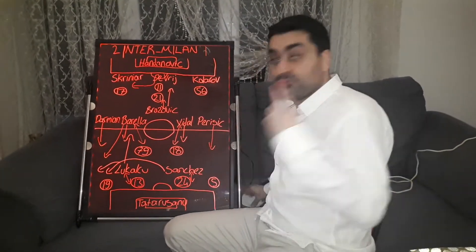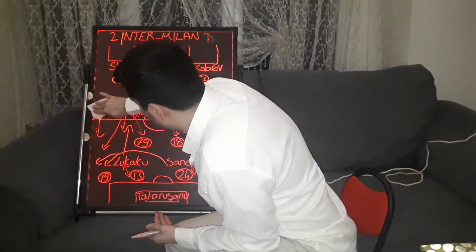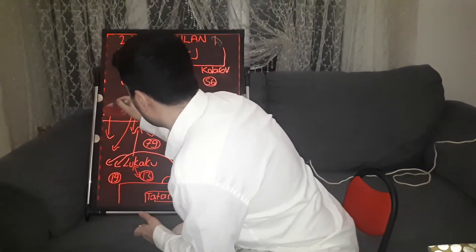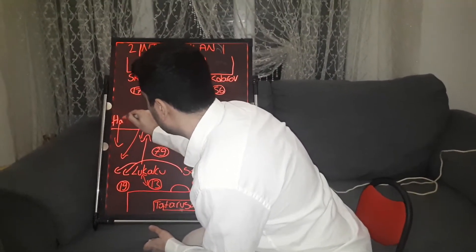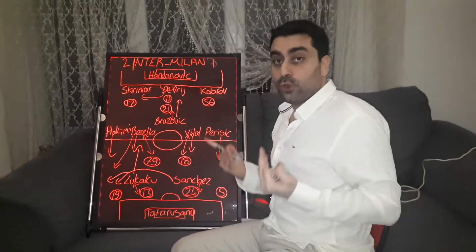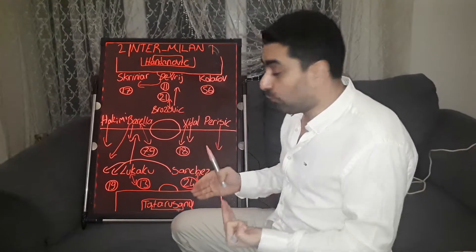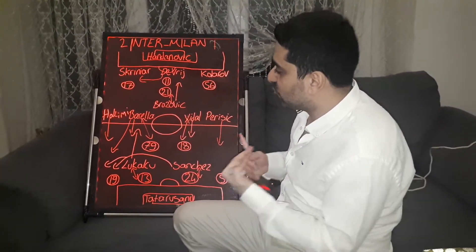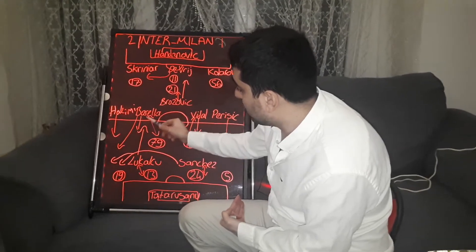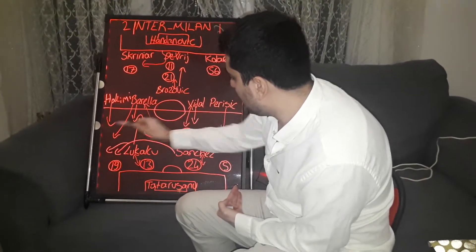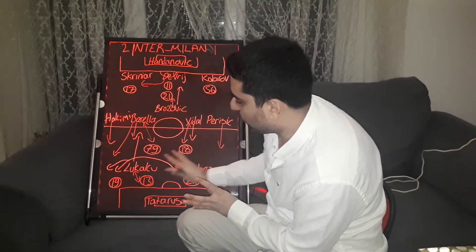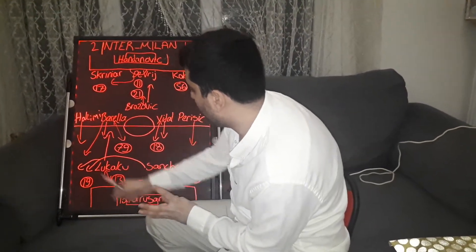Inter started the second half with a substitution: Darmian out, Hakimi in, playing on the right. In the second half, Hakimi pushed forward, bringing the ball into attack, and Inter generally progressed their attacks from the right with Hakimi. Barella and Alexis Sanchez also continually moved close to the right, forcing pressure on AC Milan's left back.